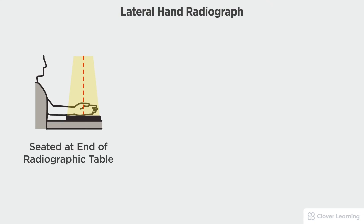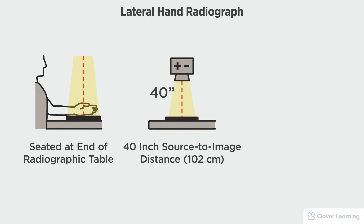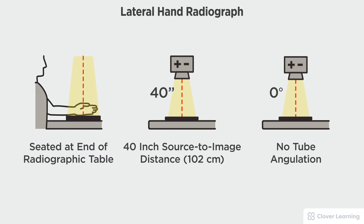In this view we will be demonstrating the lateral hand. The lateral hand should be performed with the patient seated at the end of the radiographic table with the image receptor placed tabletop with a 40 inch source to image distance and no tube angulation.